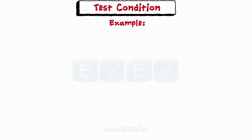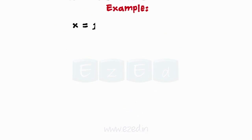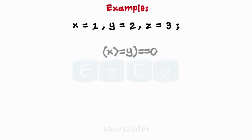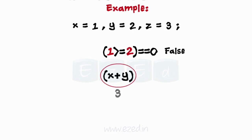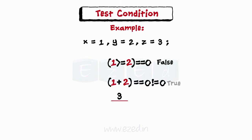Let's take an example: x equals 1, y equals 2, z equals 3. The expression x >= y evaluates to 0 (false), as 1 is not greater than 2. The expression x + y evaluates to 3, as 1 plus 2 is 3, and since it is a non-zero value, the result is true.